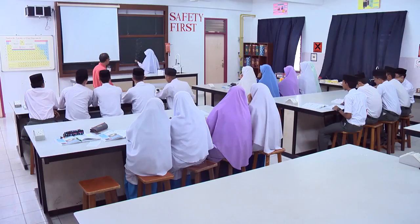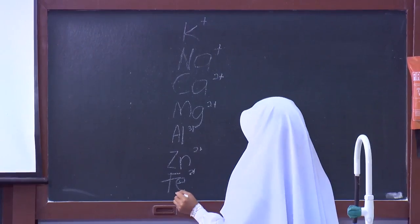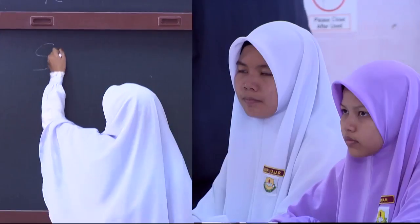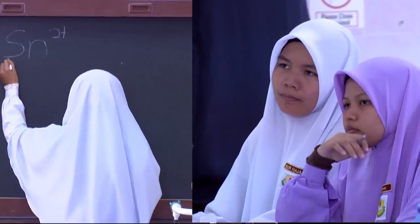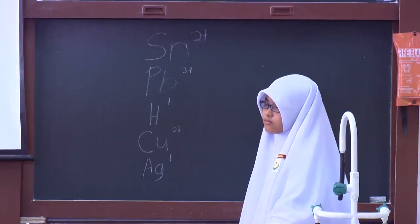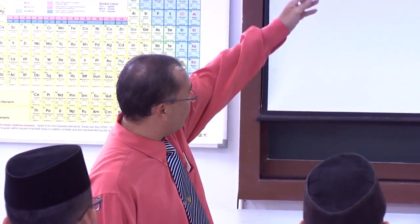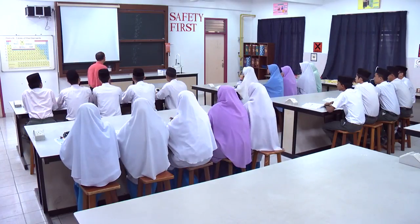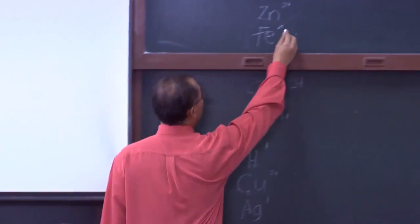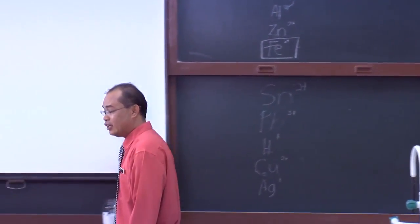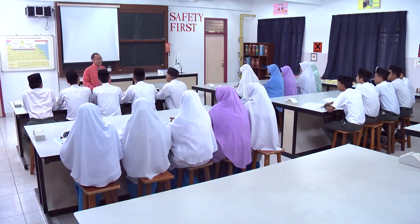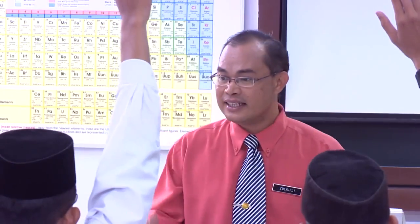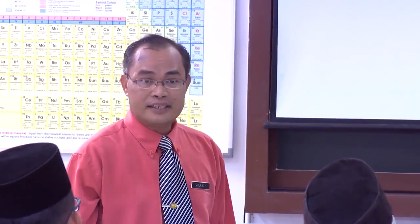Please check whether what your friend wrote is correct or not. Thank you. Please look at the electrochemical series written by your friend. Is it correct? Yes, it is correct. In the experiment just now, we used iron (ferum) in the form of iron nails. Besides iron, there were four other metals we used. Can you state the metals that are above iron in the electrochemical series? Akhil, please — magnesium and zinc, teacher. Magnesium and zinc. Correct, good.